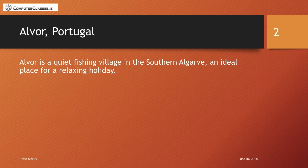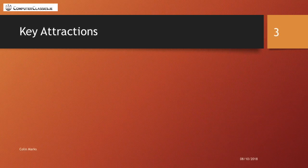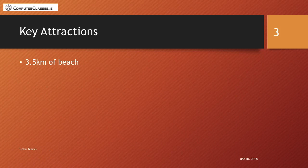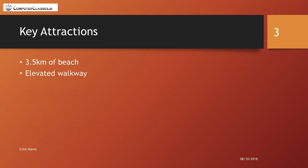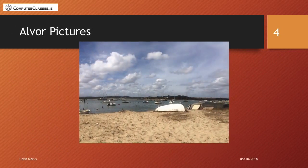We talk about Alvor a bit, people can see what's on the board. We click enter and say 'now I'm going to speak about some of the key attractions that Alvor has.' The first one is 3.5 kilometers of beach — you can talk about this all you want until you're ready to go on to the next point. People don't know what's coming, so straight away you have the audience's attention because they're waiting on what's next. You're not losing them.